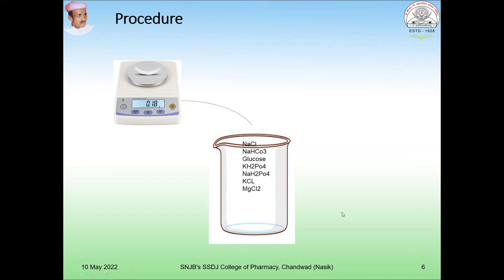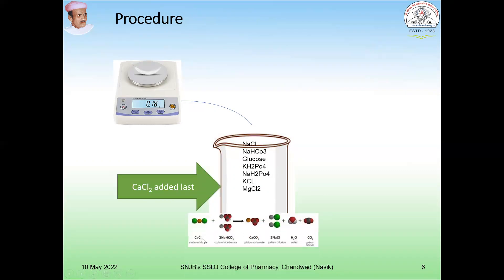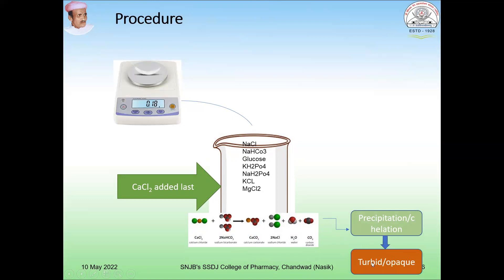At the end, add the calcium chloride solution, because if you add calcium chloride earlier in the solution, it will produce a turbid solution — you will not get a clear solution. When calcium chloride is added to the solution, it forms a reaction with the bicarbonate and precipitation will occur. This turbidity or precipitation inside the solution will not provide the proper environment to the tissue, and we cannot observe the tissue in the organ bath properly. This is the reason why calcium chloride is added at the end.